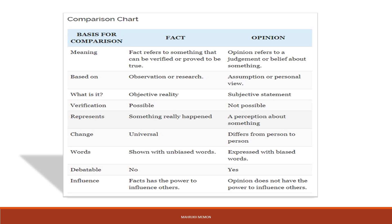Facts are based on observations or research, while opinions are based on assumptions or personal views — no observation or research is involved. When talking about facts, we need to make sure it is based on certain research or observation. So again, facts are objective and opinions are subjective.